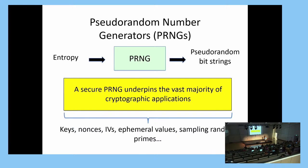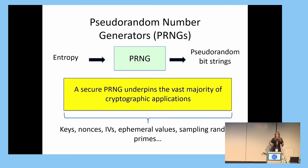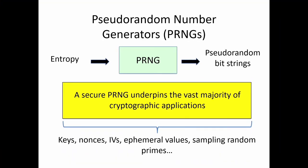At a high level, a pseudo-random number generator, or PRNG, takes as input a short, high-entropy seed and uses this to produce much larger quantities of pseudo-random bits. And given that most modern cryptography relies on a random input in the form of keys, nonces, IVs, and so on, it's fair to say that a secure PRNG underpins the vast majority of cryptographic applications that we use today.